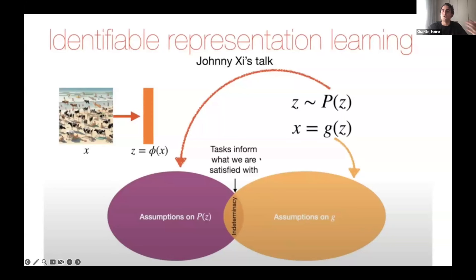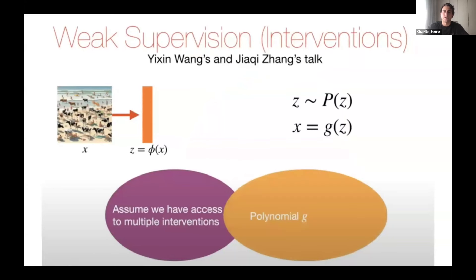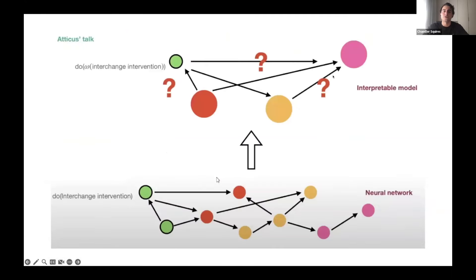We got into causal representation learning, talking about that latent representation being in the form of a causal graph — variables related by a causal graph — and trying to learn that representation from interventions. In Jachi's talk, she discussed how learning that representation allows you to extrapolate from single gene knockouts to double gene knockouts, or more generally from single node interventions to combinations of those interventions.